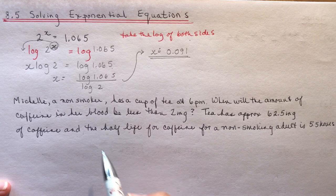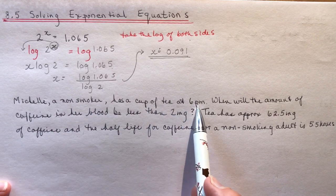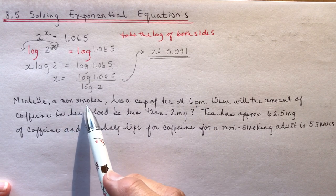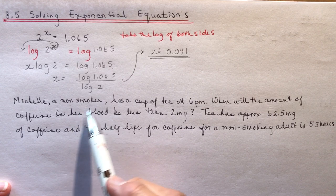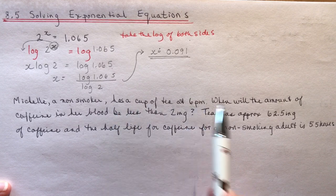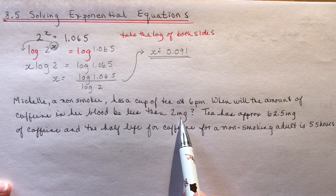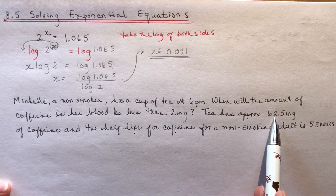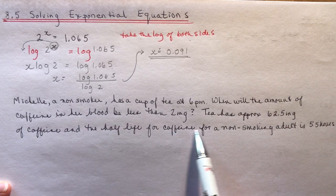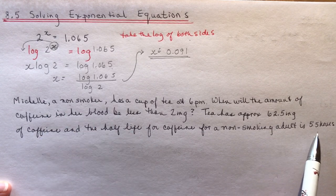Now we're going to do a word problem, similar to one you did in grade 11. Michelle, a non-smoker, has a cup of tea at 6 p.m. Smokers and non-smokers have a different metabolism for the half-life of caffeine. When will the amount of caffeine in her blood be less than 2 mg? Tea has approximately 62.5 mg of caffeine, and the half-life of caffeine for a non-smoking adult is 5.5 hours.